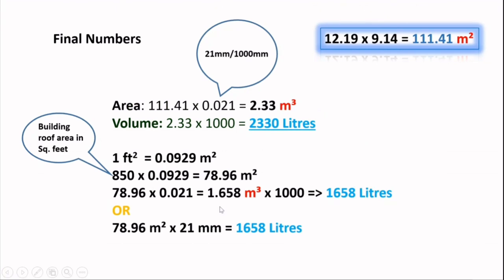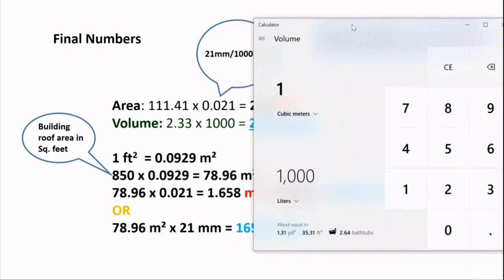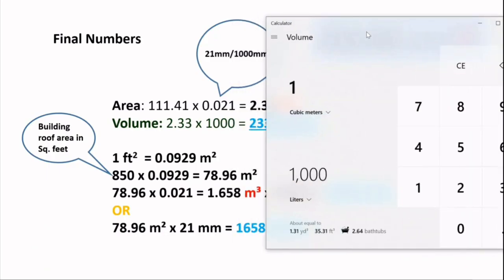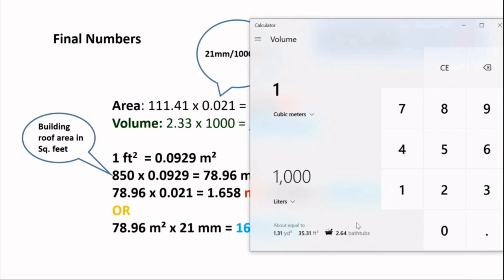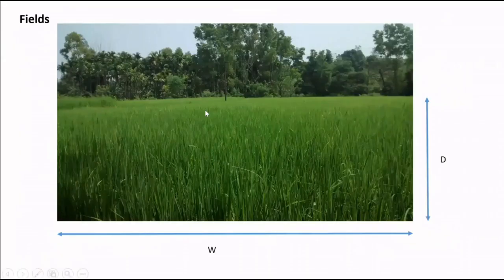We will open a calculator and see how it works. We know the area in cubic meter, that is 1.658. So I am going to clear the previous value and type 1.658. Right, this is the liters of water what we have calculated. So our calculation is perfectly all right.